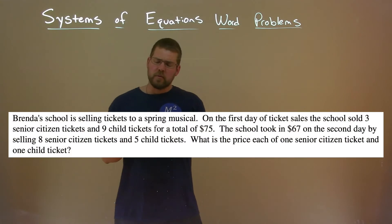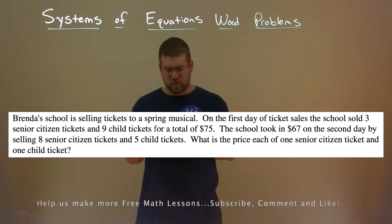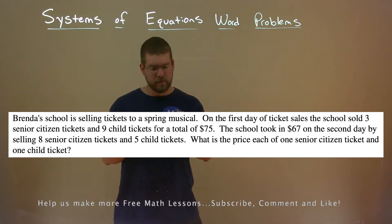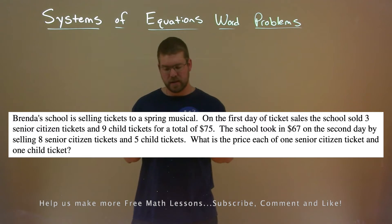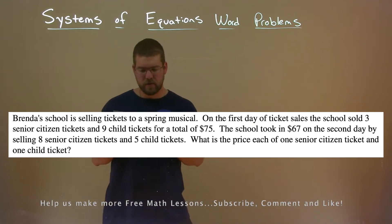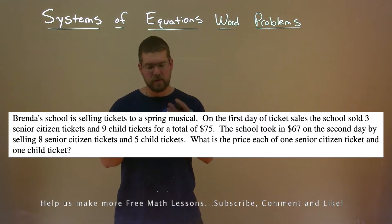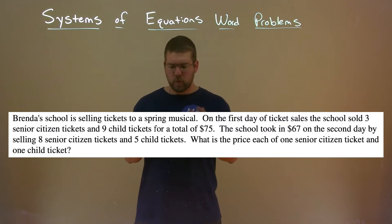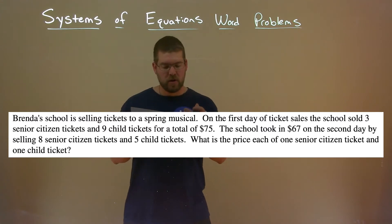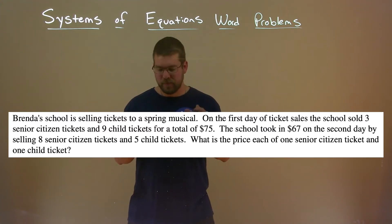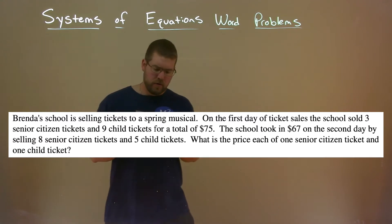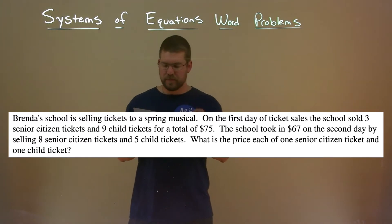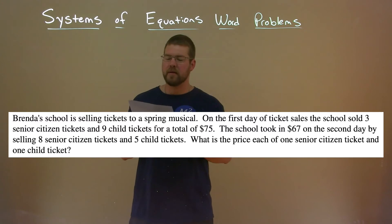Brenda's school is selling tickets to a spring musical. On the first day of ticket sales, the school sold three senior citizen tickets and nine child tickets for a total of $75. The school took in $67 on the second day by selling eight senior citizen tickets and five child tickets. What is the price of one senior citizen ticket and one child ticket?